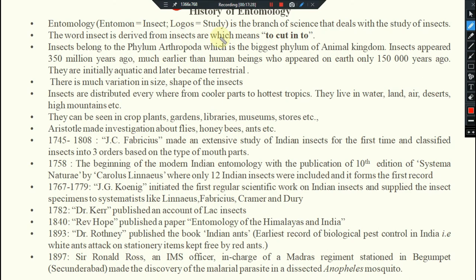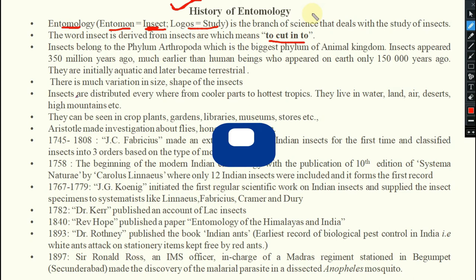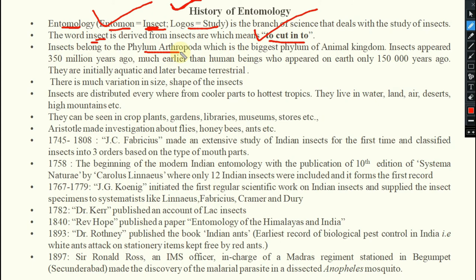Regarding the etymology of entomology: the word entomology came from the Greek word, where 'entomon' means insect and 'logos' means study. So entomology is the branch of science that deals with the study of insects. The word 'insect' came from a Latin word meaning 'cut into different segments.' Insects belong to the phylum Arthropoda, which is the biggest phylum of the animal kingdom, and insects appeared 350 million years ago — much earlier than human beings, who appeared only 150,000 years ago.